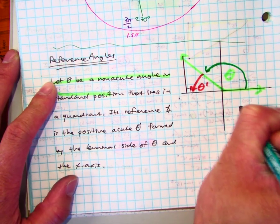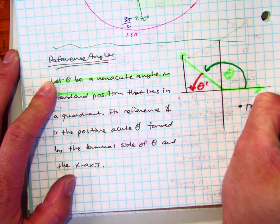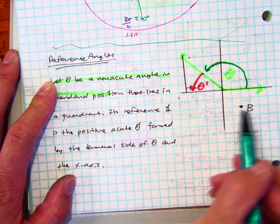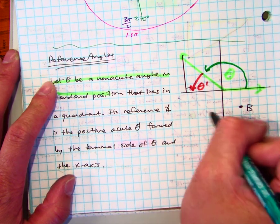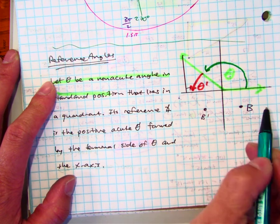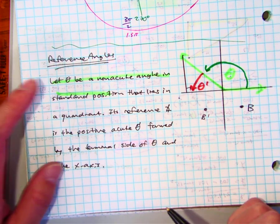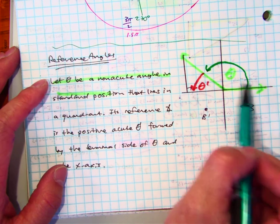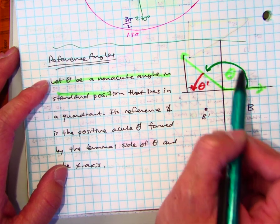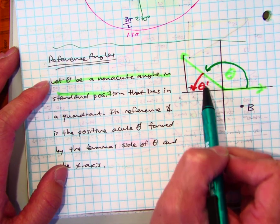Back in geometry, you might have had a problem where they said point B and asked you to reflect it over the y-axis. They call that B prime to show that it's been translated, rotated, or reflected. So that's the same idea here—you have the given angle, but I'm only using that reference angle.